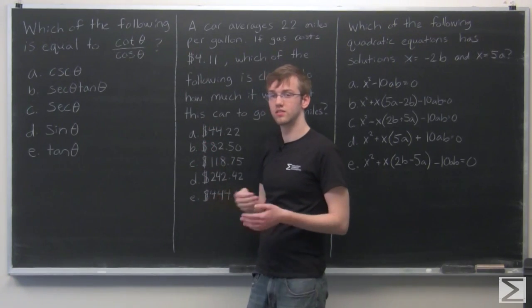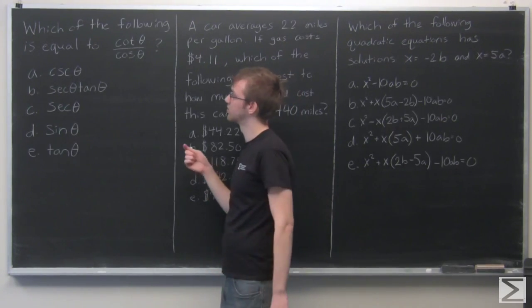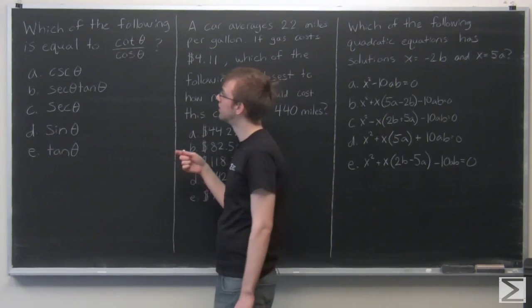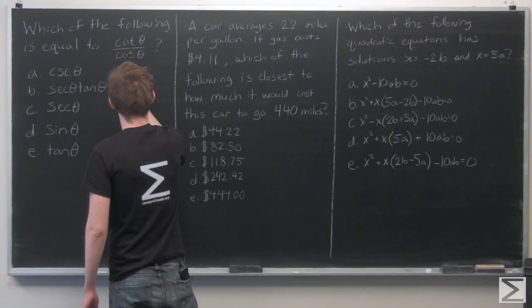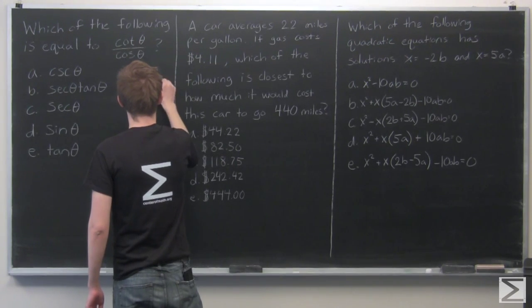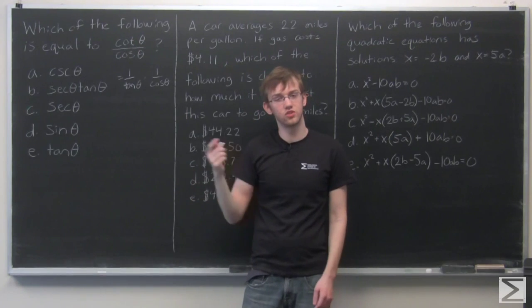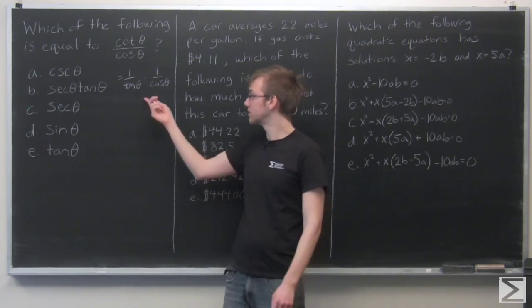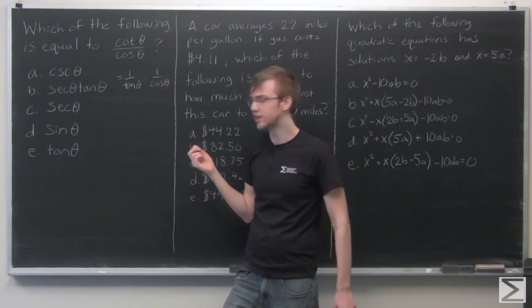Cotangent theta, what's that? Cotangent is the inverse of tangent. So that's going to be 1 over tangent. And remember, what is tangent? Tangent is sine over cosine. So if this is the inverse of tangent, it's going to be the other way around, cosine over sine.